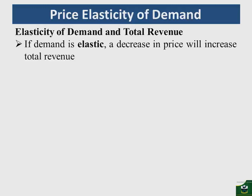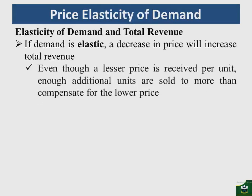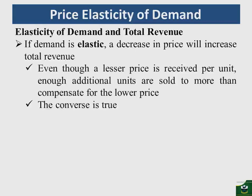When demand is elastic and price decreases, according to the law of demand, quantity demanded will increase. This increase in quantity demanded has a greater impact than the decrease in price, so total revenue increases. Even though a lower price is received per unit, enough additional units are sold to more than compensate for the lower price, so revenue tends to increase. The opposite is true: if price increases, total revenue will decrease.